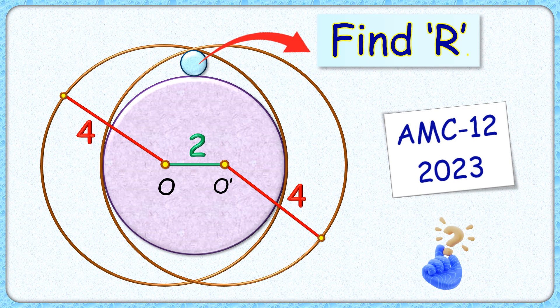Welcome everyone, today's interesting question is from American Mathematics Challenge 2023. In this, given are two intersecting circles with radius 4 cm each and centers as O and O dash. The distance between the centers is given as 2 cm.